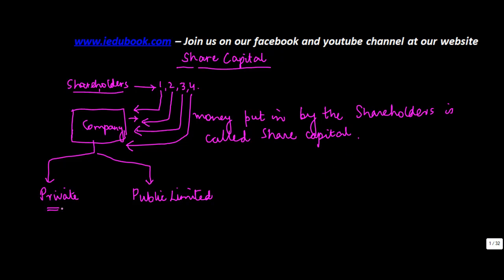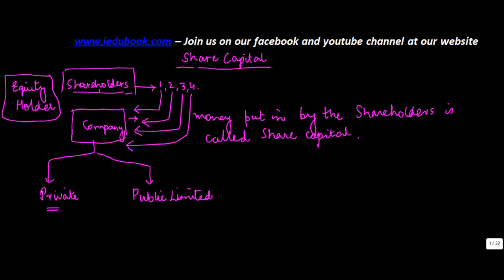In private companies, the people who have put in the money are called the shareholders or equity holders. I will come back to the types of shares. In a private company, normally the number of shareholders is less, whereas in a public company it can run into thousands and millions of shares. When I say public company, what I mean is a public listed company.